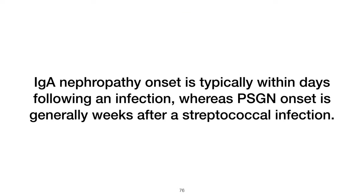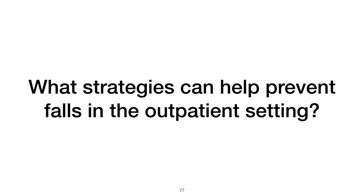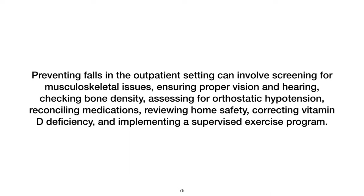What strategies can help prevent falls in the outpatient setting? Preventing falls in the outpatient setting can involve screening for musculoskeletal issues, ensuring proper vision and hearing, checking bone density, assessing for orthostatic hypotension, reconciling medications, reviewing home safety, correcting vitamin D deficiency, and implementing a supervised exercise program.